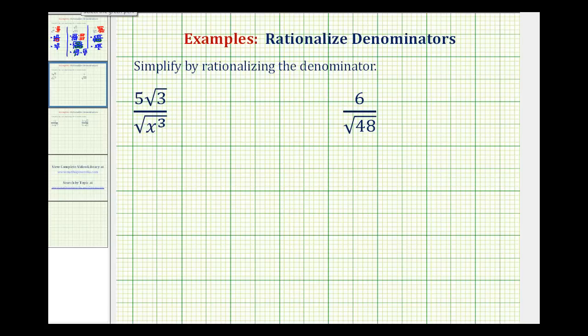We want to rationalize the denominators of the given radical expressions. To do this, we want to eliminate the square roots from the denominator. But let's first start by simplifying the denominators.